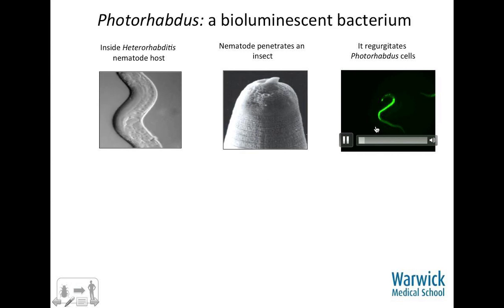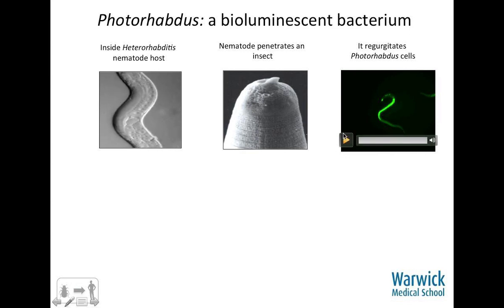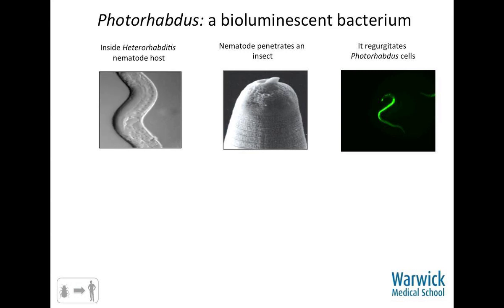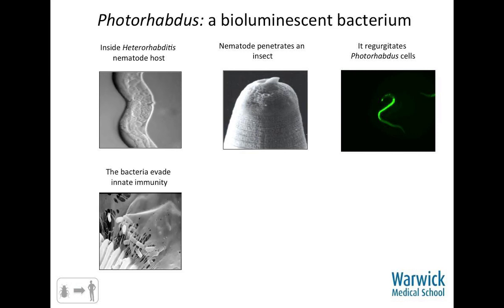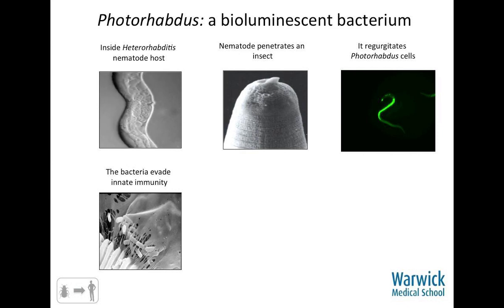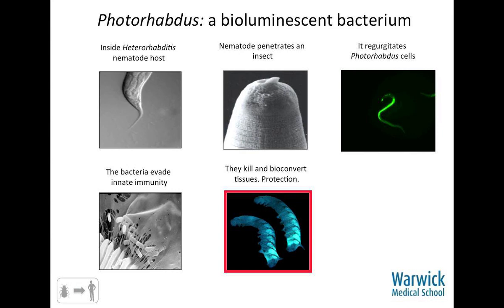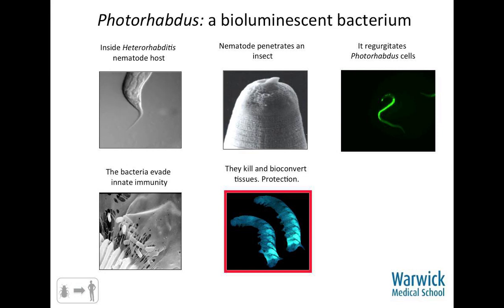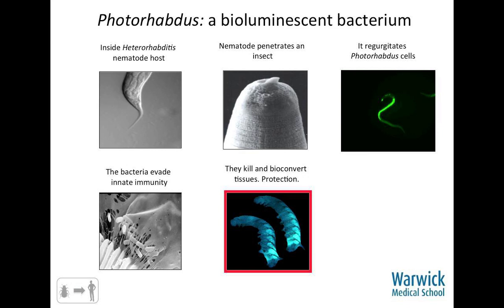Once inside the insect — there's a movie by Todd Cheeks that unfortunately doesn't work — but what you would see is the worm crawling around with GFP-labelled bacteria coming out of its mouth. It vomits up the bacteria into the open blood system of the insect. Only about 100 cells ever get into an insect, even quite large ones. These few bacterial cells are able to completely resist the insect's very potent innate immune system, very rapidly kill the insect producing a battery of toxins, and bioconvert the insect's tissues into more bacteria. When the insect is dead, it starts to bioluminesce — we don't know exactly why, but there are various theories.